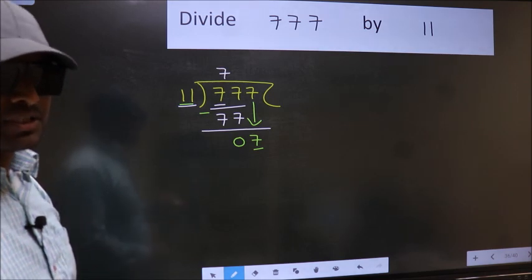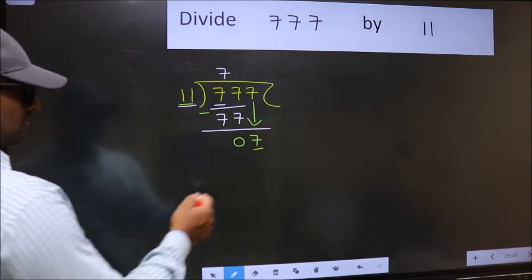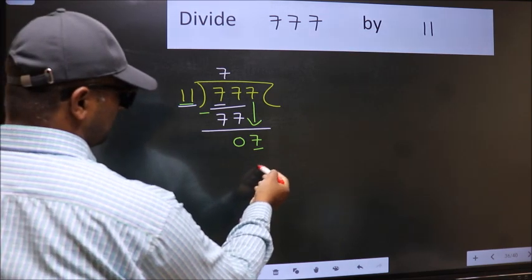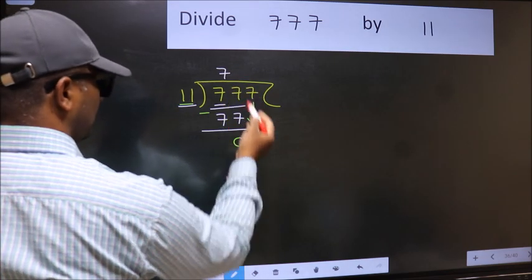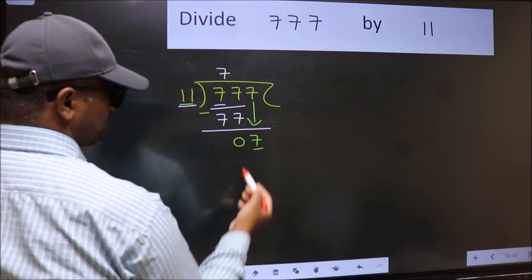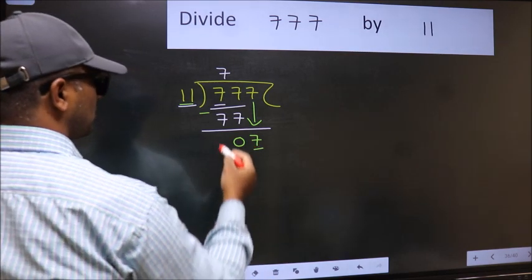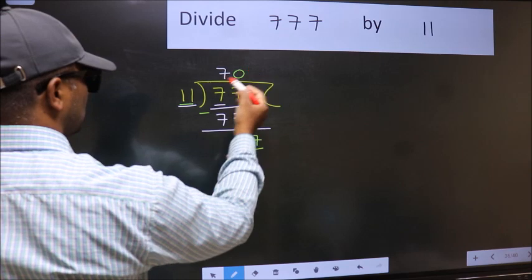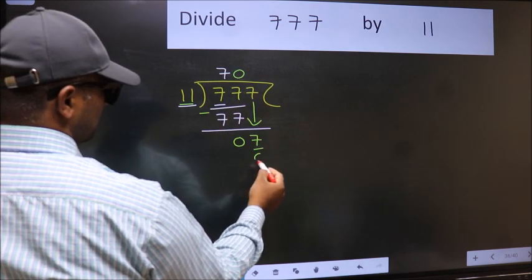Instead, what you should think of doing is, which number should we take here? If I take 1, we will get 11. But 11 is larger than 7. So what we should do is, we should take 0. So 11 into 0 is 0.